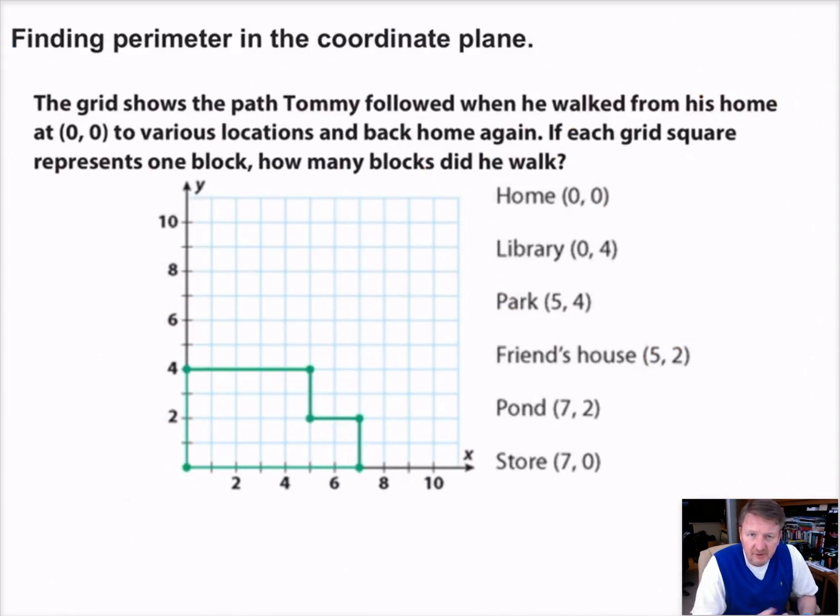So we can use that information. If we know how to draw these shapes, we can use that information to find perimeter. It says the grid shows the path Tommy followed when he walked from his home at 0, 0. So this is his home, 0, 0, to various locations and back home again. Each grid square represents one block. So each grid square represents one block. How many blocks did he walk? So we started at home. We got that one marked. Then he went to the library at 0, 4. That's the library. Now how we do this is we just count the number of squares. We got 1, 2, 3, 4. So from here to here, he walked four blocks.